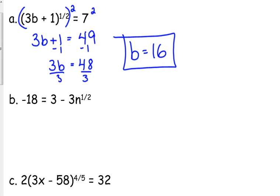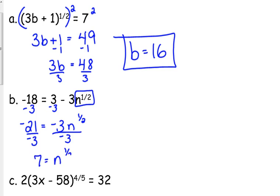Now, b is a little bit different. That entire right side is not in parentheses. That entire right side is not raised to the one-half power. Only the n is raised to the one-half power. So we've got to start by isolating this expression right here. The n to the one-half. We've got to get it by itself. So we start by subtracting 3 from both sides. That gives us negative 21 is equal to negative 3 n to the one-half. Then we divide both sides by negative 3.